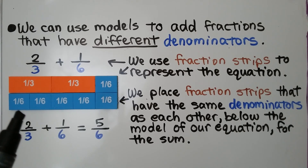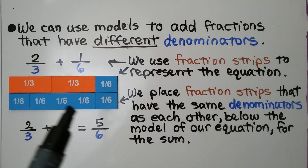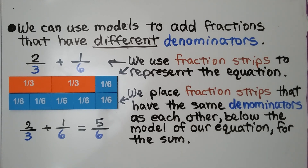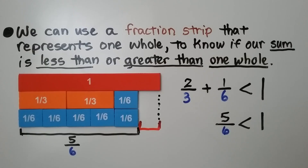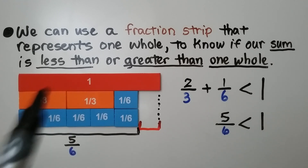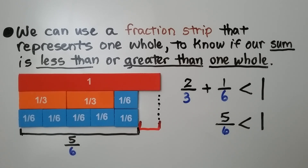We can count 5 one-sixth pieces. 2 thirds plus 1 sixth is equal to 5 sixths. We can use a fraction strip that represents one whole — this red one — to know if our sum is less than or greater than one whole.